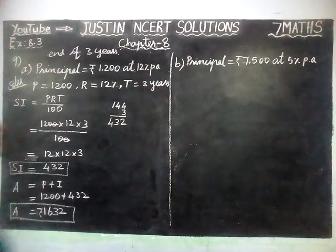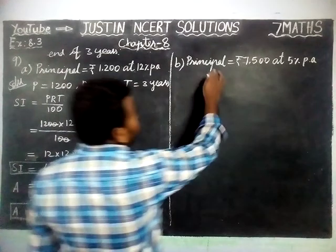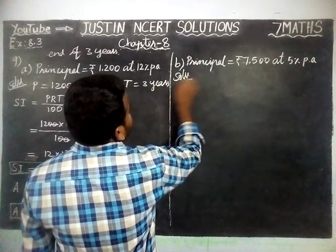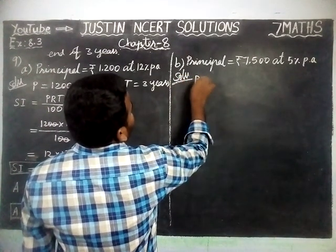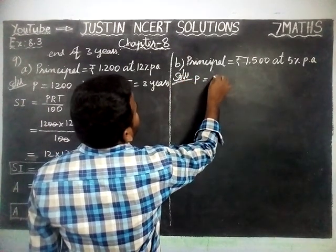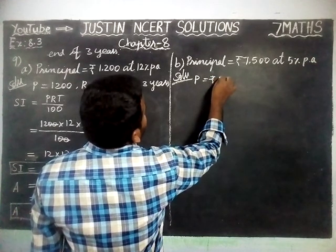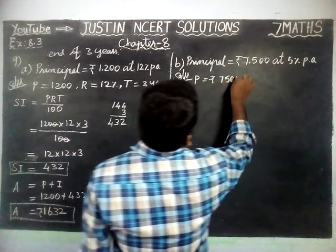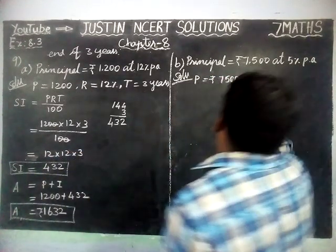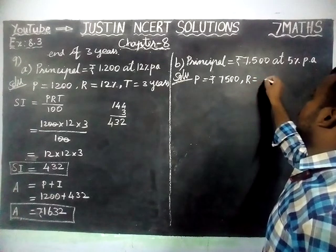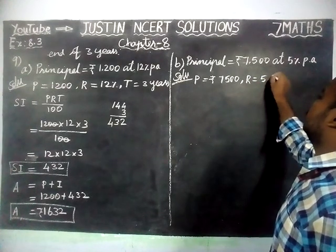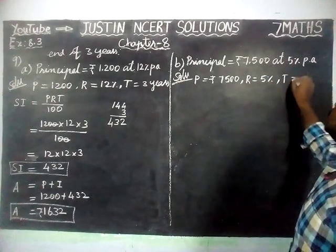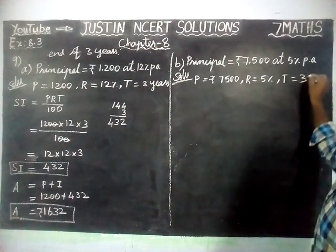Next sum, Part B. Here Principal P is equal to Rs. 7500, Rate of Interest is equal to 5%, and Time is equal to 3 years.